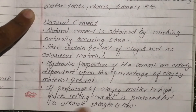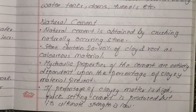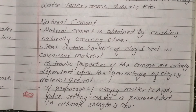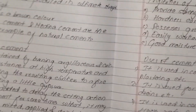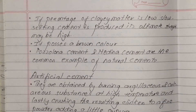If the percentage of clay matter is high, quick-setting cement is produced but the ultimate strength is low. If the clay material is low, it will be a slow set.